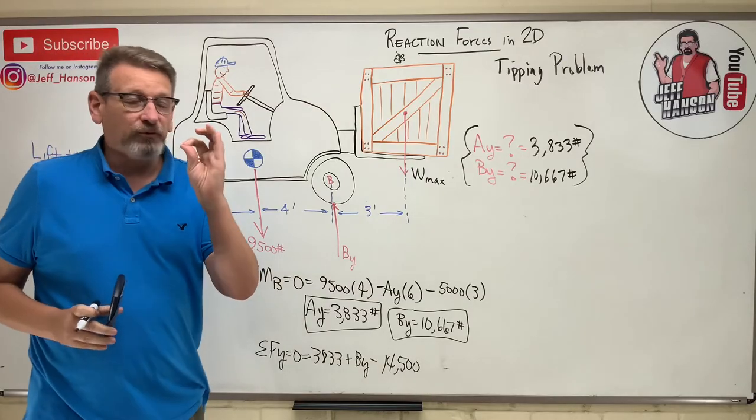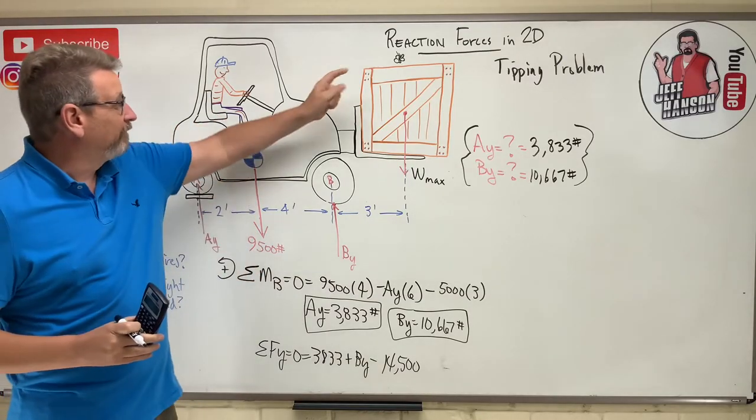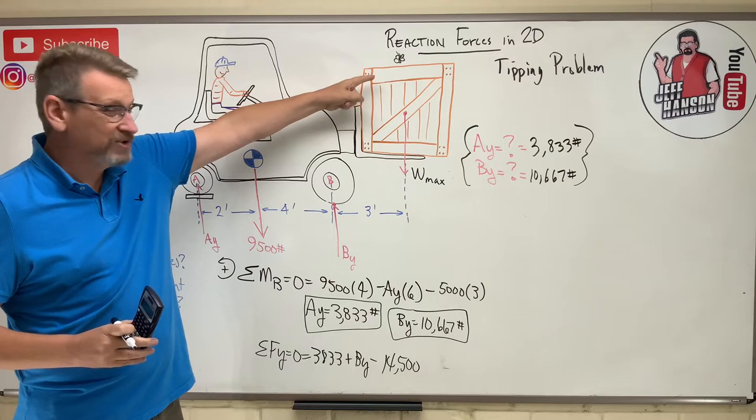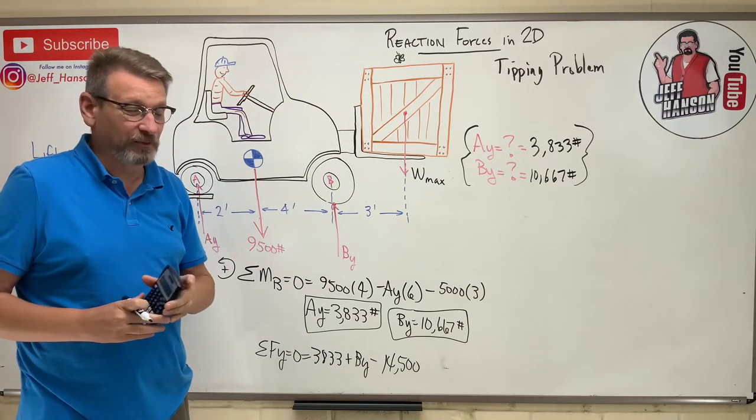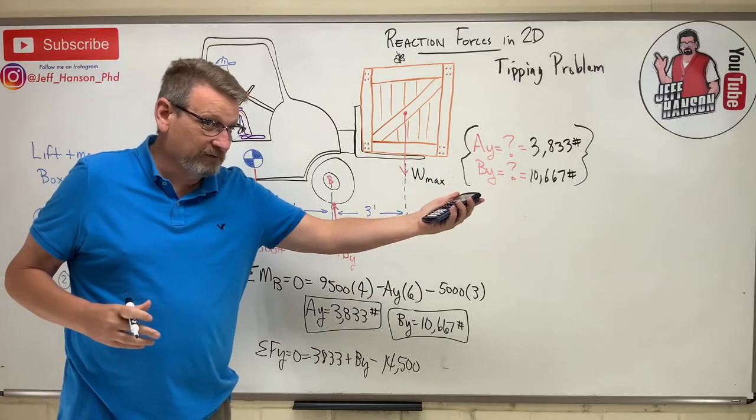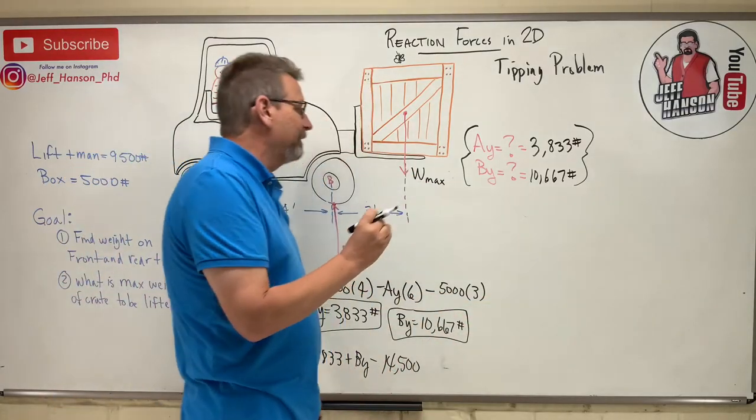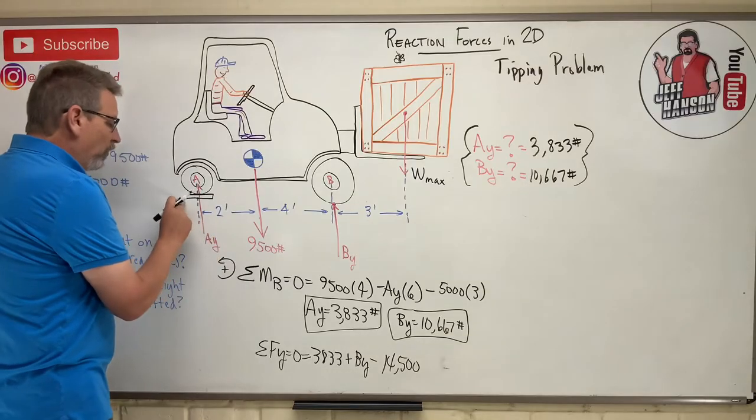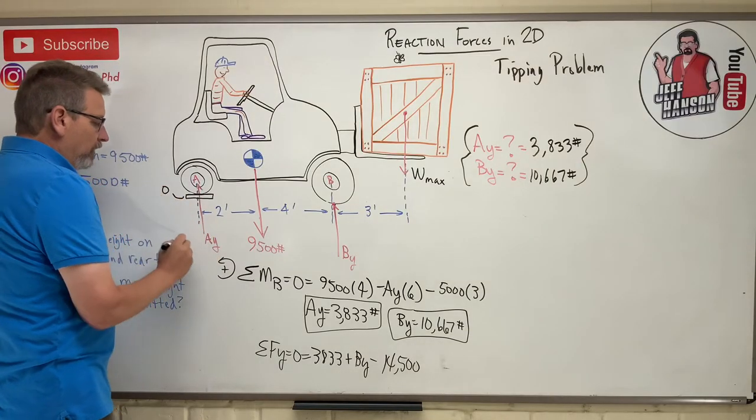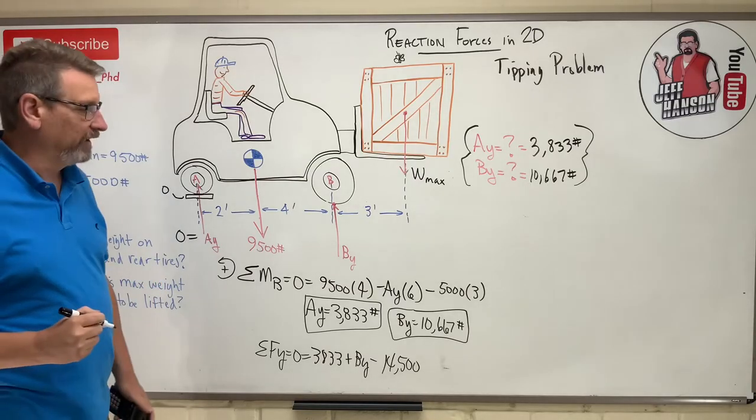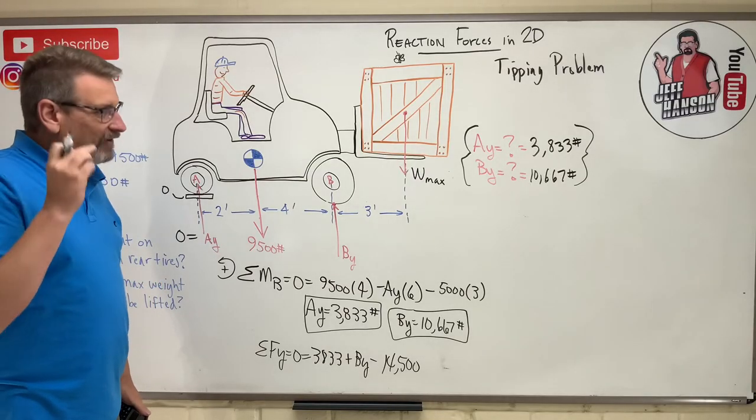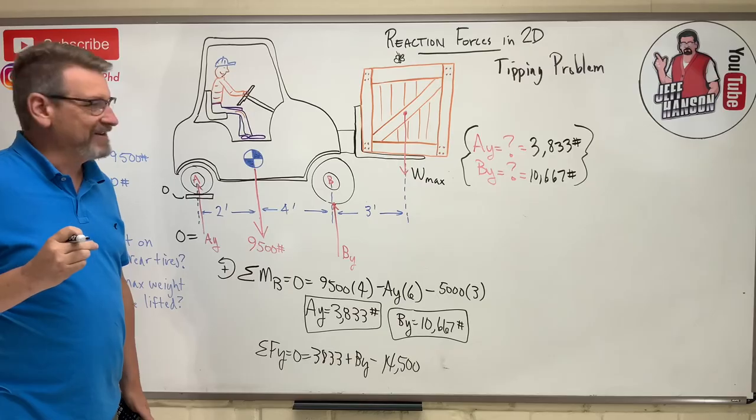Right, if you had a scale under that back tire, okay, at the instant before it tips, we're talking on the verge of tipping. We're talking about if that butterfly lands on top of that box, what is going to happen to the whole system, right? It's right there and that butterfly lands on it, too much, over we go, right? We're perfectly balanced. Then this scale would read zero, which would make Ay equal to zero, wouldn't it?